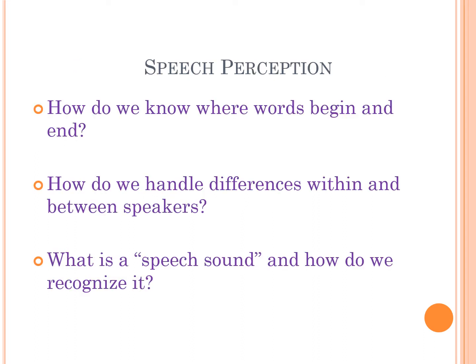Coming back to the summary slide: how do we know where words begin and end? How do we handle differences within and between speakers? And what is a speech sound and how do we recognize it? It's very difficult to tell where words begin and end in another language, but in our own language we've learned the words and we use transitional probabilities — what syllables and sounds are likely to follow what other syllables and sounds within a word. We've learned these rules statistically and implicitly.